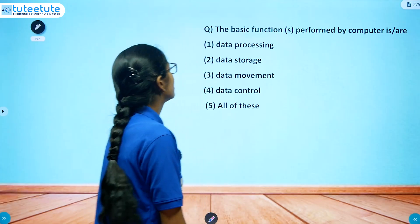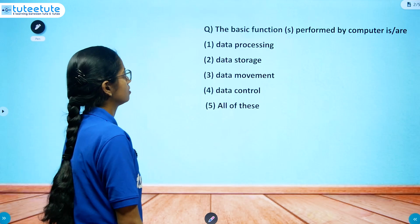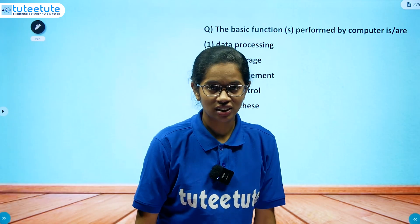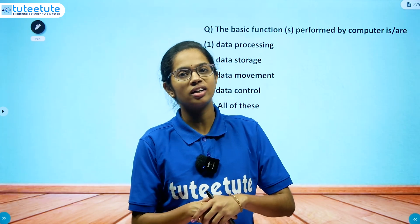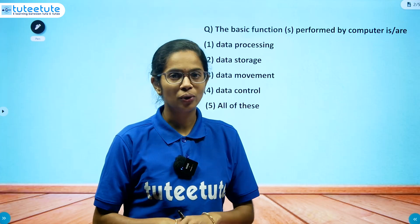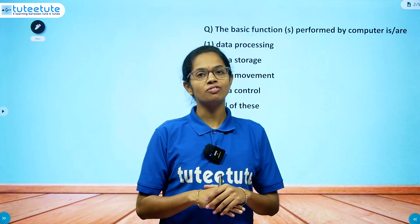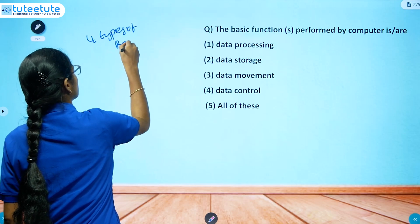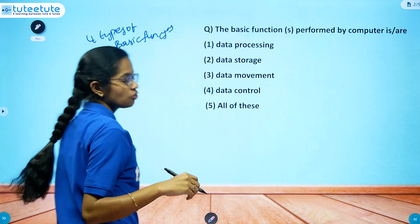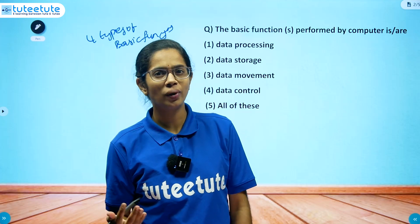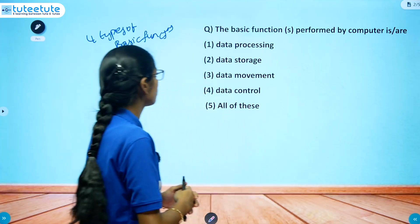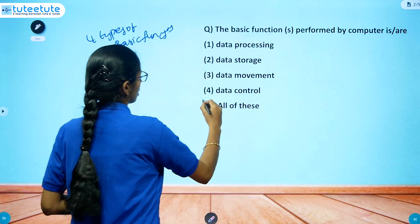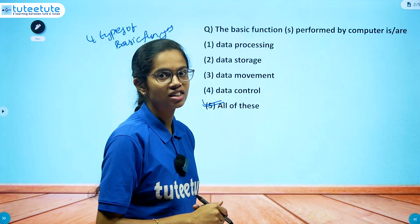First question: the basic functions performed by a computer. Options are: data processing, data storage, data movement, data control, or all of these. What are the basic functions of the computer? Based on the fundamental working of the computer, we have four types of basic functions: data processing, data storage, data movement, and data control.